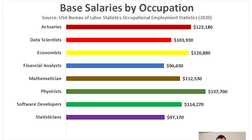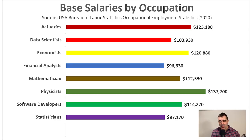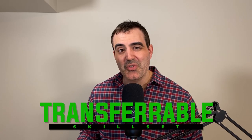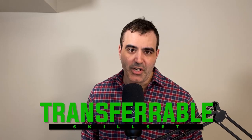As far as base wages are concerned, statisticians do pretty well. According to the Bureau of Labor Statistics, the average national wage for a statistician was $97,170 in 2020. This was more than financial analysts, but a little less than actuaries, economists, physicists, mathematicians, and software developers. And as mentioned, many statisticians can easily make their way into those fields if they want to — that's one of the beauties of this occupation. You're building a transferable skill set you can use in many different occupations.